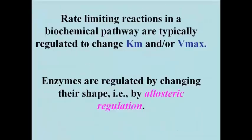Rate limiting reactions in a biochemical pathway are typically and often regulated. Why would they be regulated? Because they're rate limiting. If you want to make more final product, to make more E, you would have to increase the rate of the rate limiting reaction. You could do this by increasing its Vmax, by increasing the affinity of the enzyme for its substrate, in other words, lowering the Km, or both.